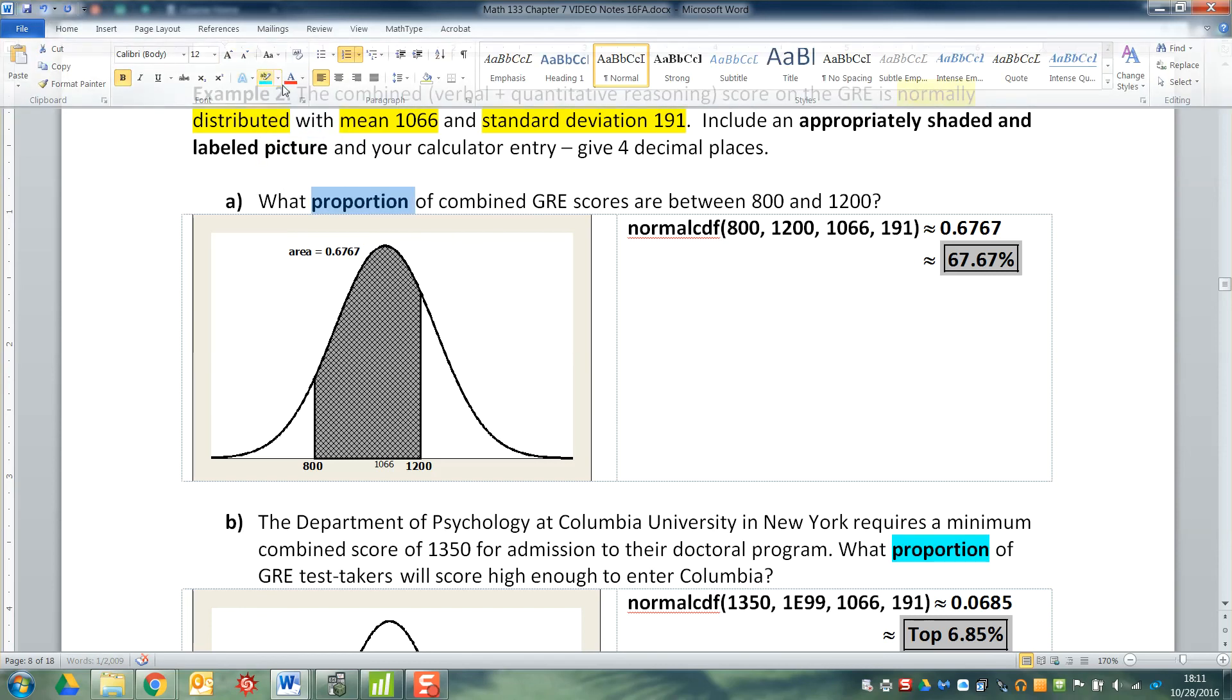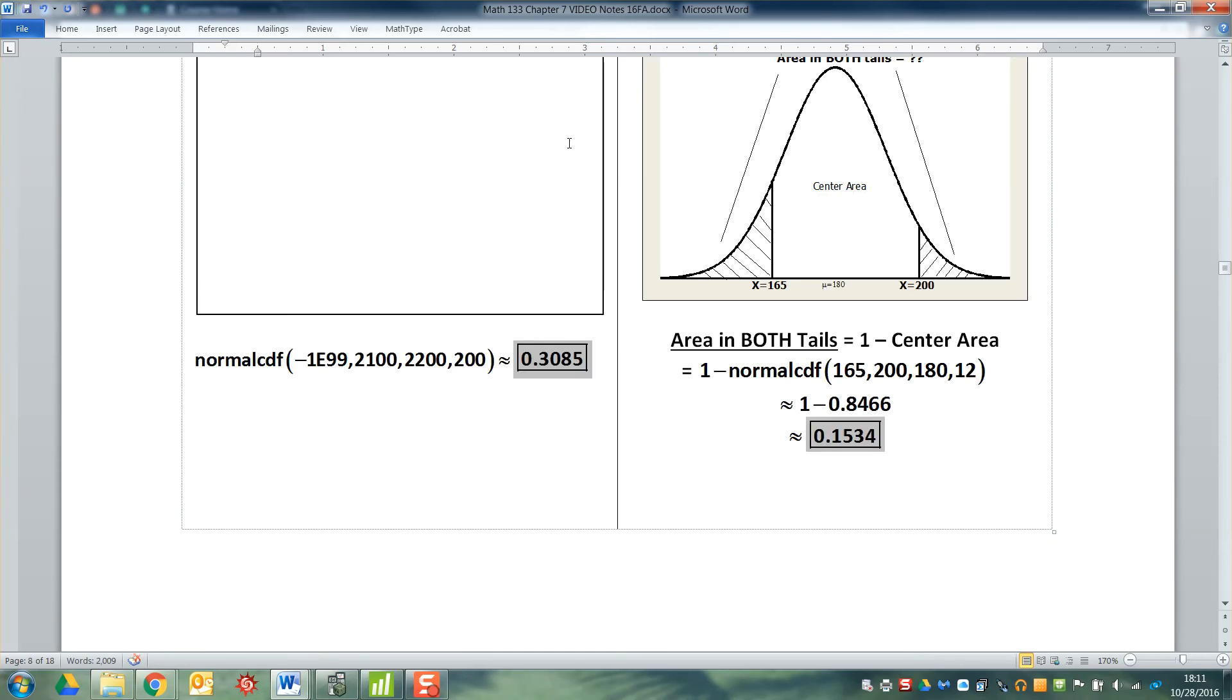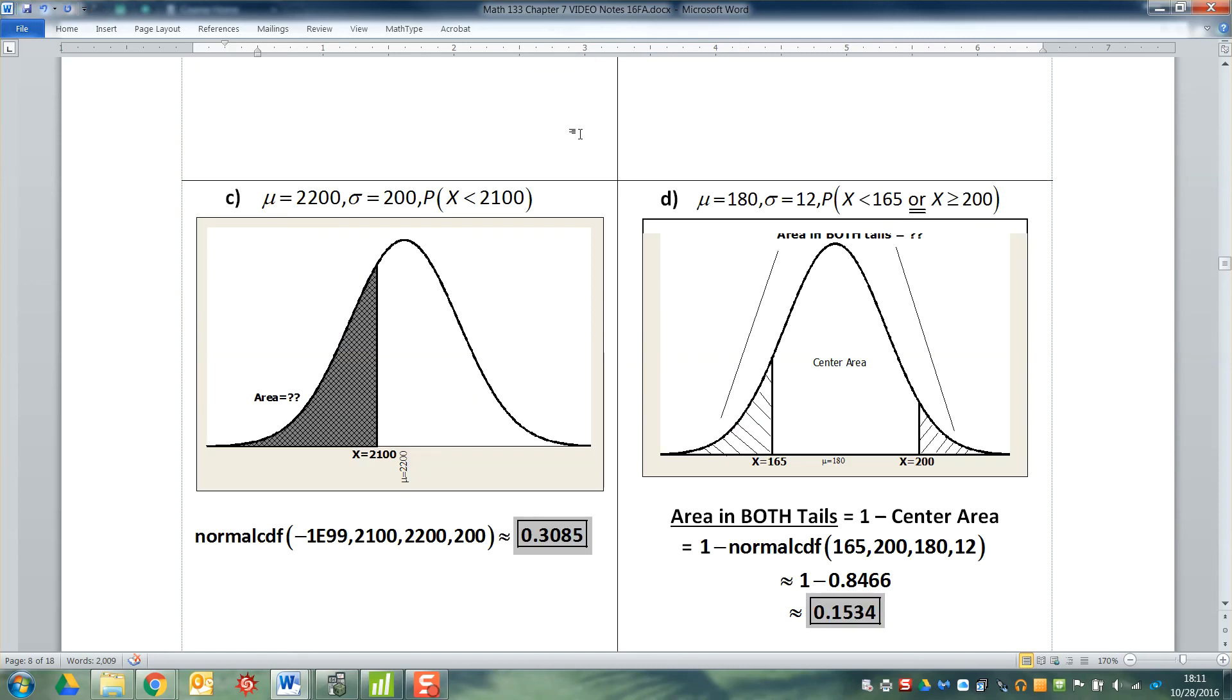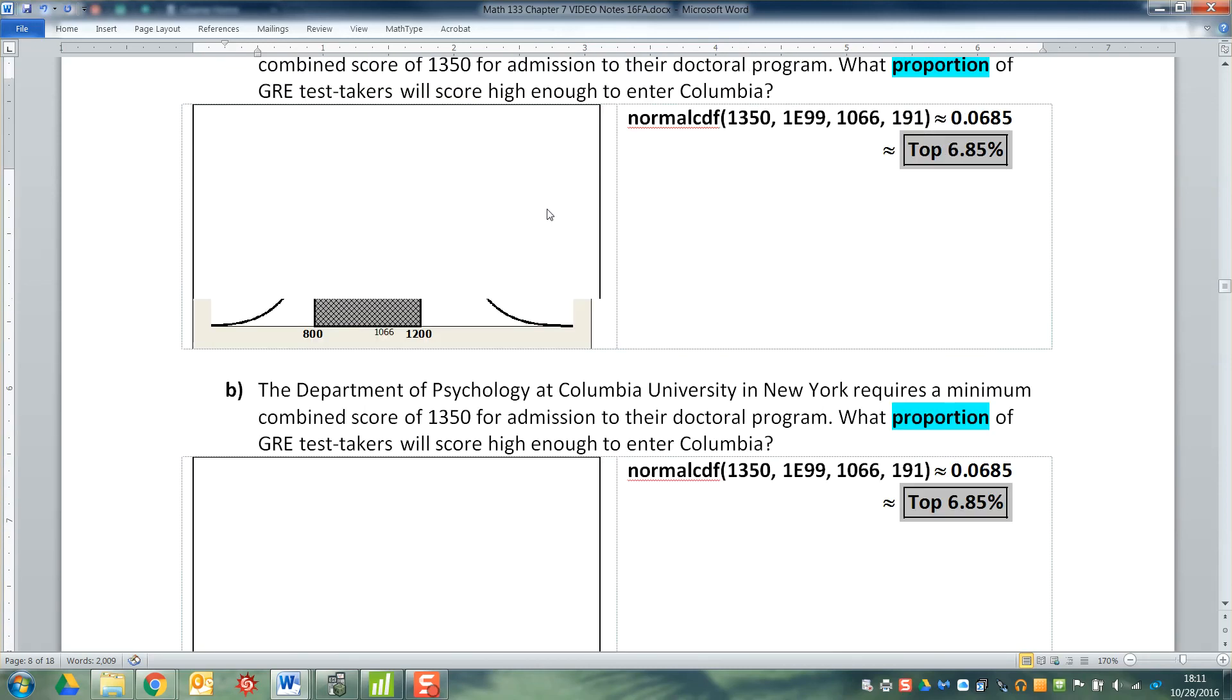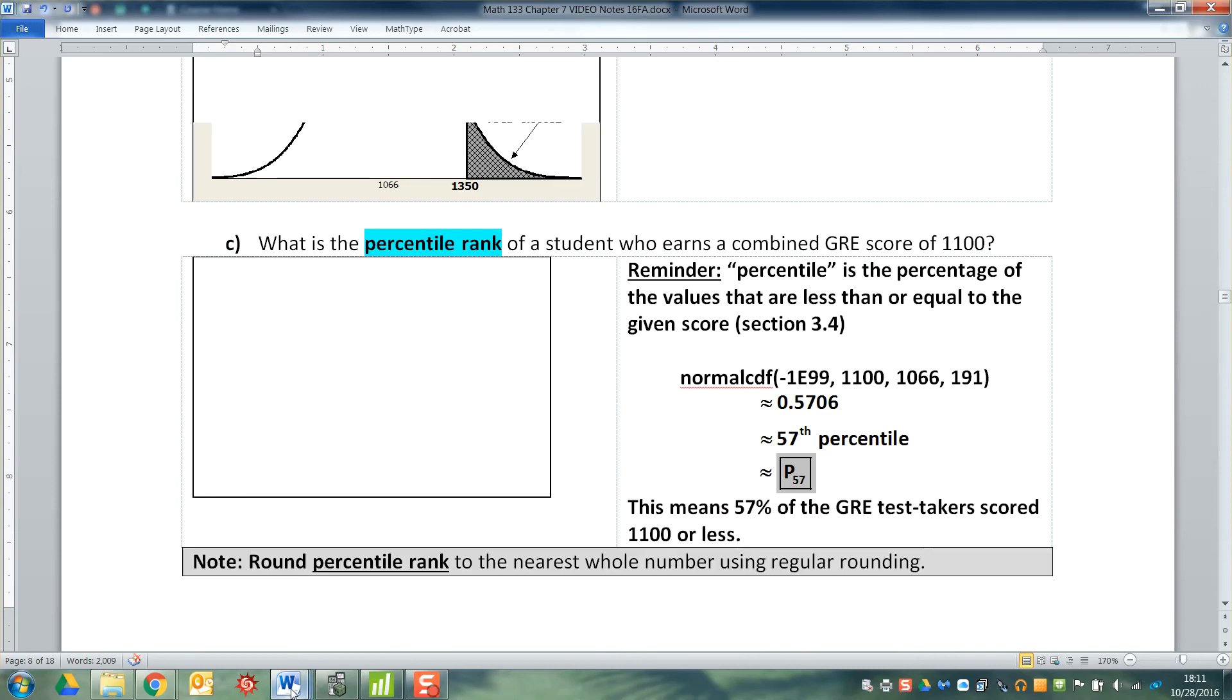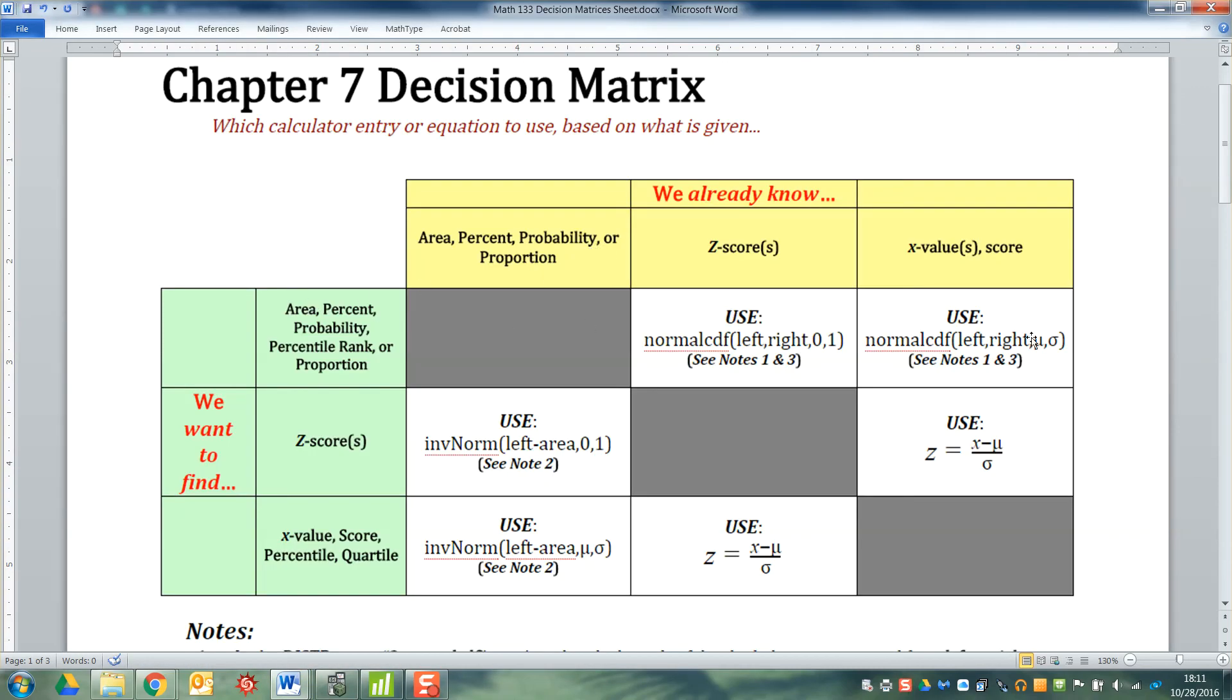So by saying what proportion, what proportion, and then before it had capital P parentheses, which means what probability, what probability. So when it's asking for probabilities, when it's asking for proportions, when it's asking for percentile rank, you're in the top row of that decision matrix, which means you're going to use normal CDF left comma right. In our case, because we knew x values, it'll be mu comma sigma. We'll figure out what the z-score thing is in another couple pages.